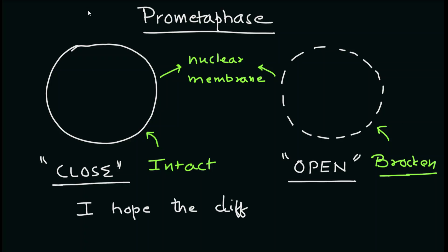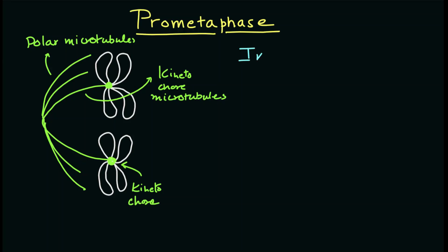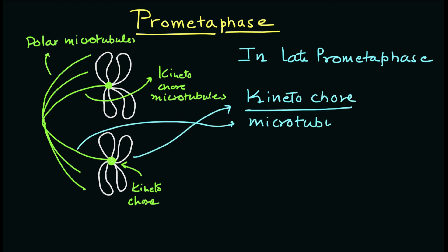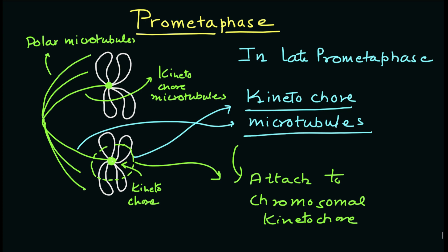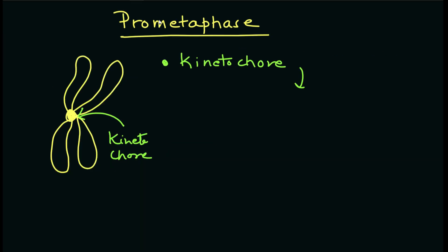The difference between open and closed mitosis should now be clear. In late prometaphase, kinetochore microtubules begin to search for and attach to the chromosomal kinetochores. Here it is important to understand what a kinetochore is.